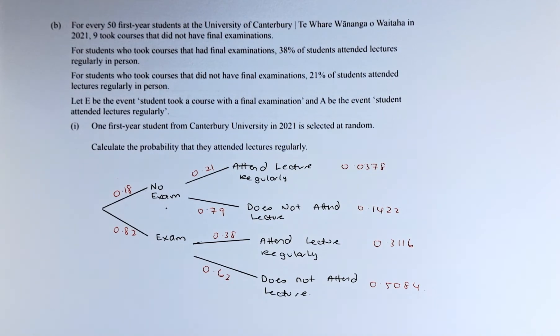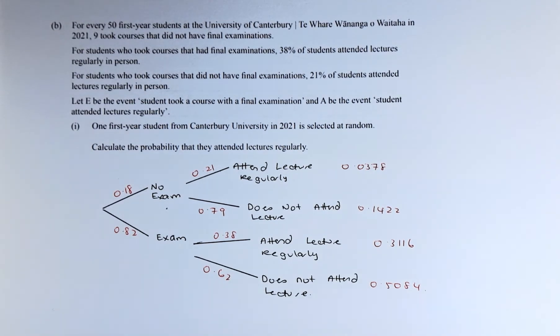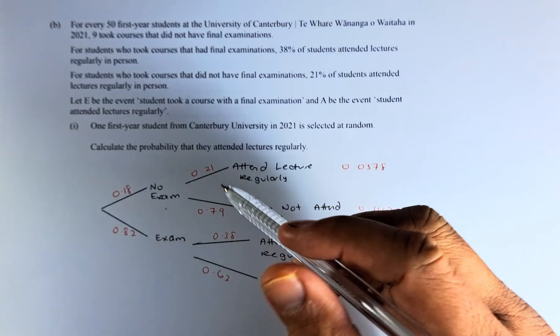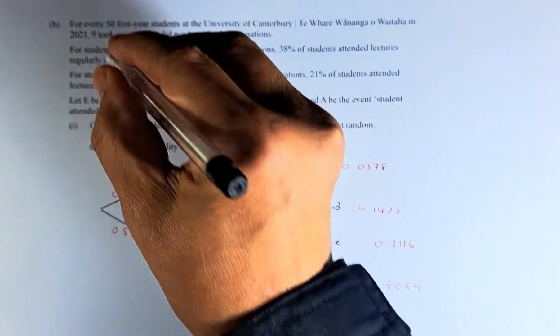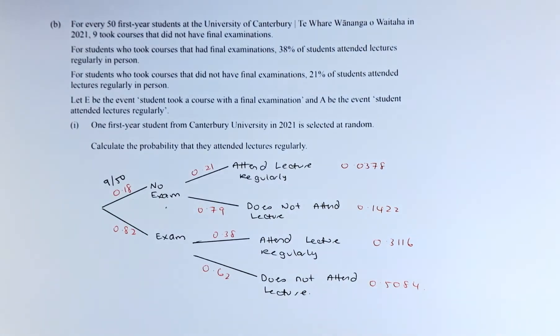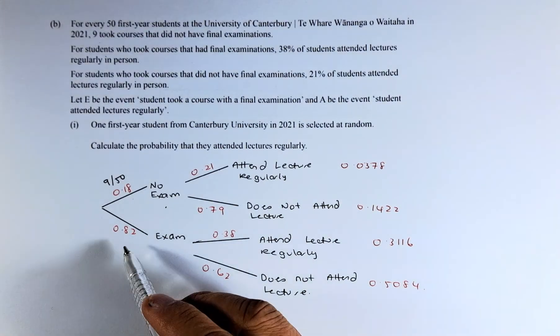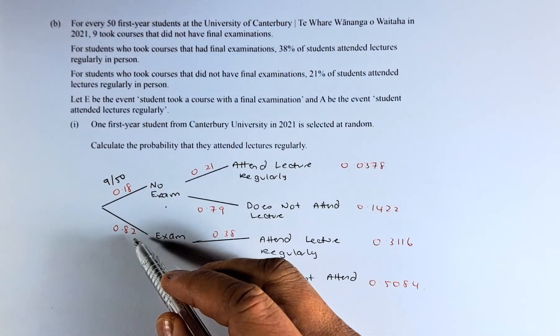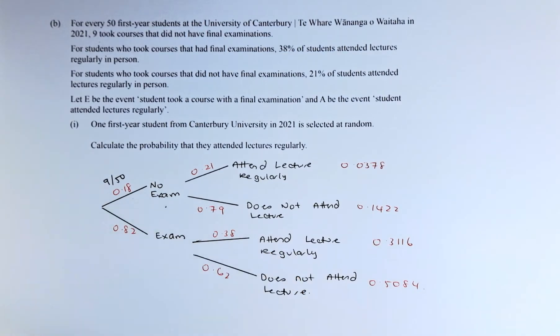For every 50 first-year students at the University of Canterbury, Te Whare Wānanga o Waitaha, in 2021, 9 took courses that did not have final examinations. So, no exam and exam. To get 0.18 is 9 out of 50. With exam will be 0.82 because 1 minus 0.18 is 0.82.